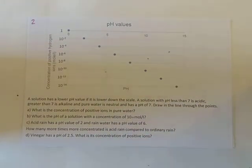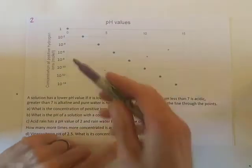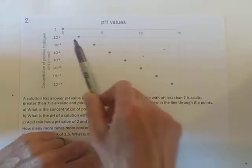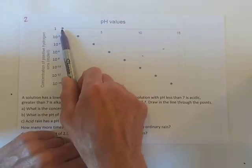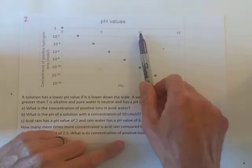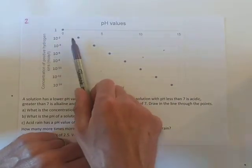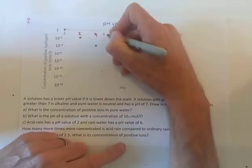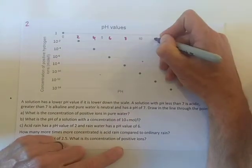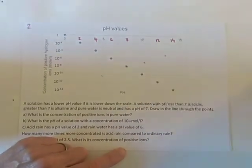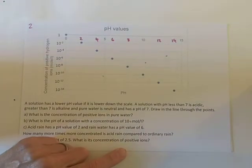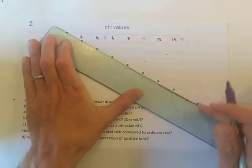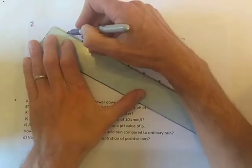Sometimes with these spreadsheet charts it can be really hard to read the numbers off — there aren't many lines to help guide us. But we know we've got a pH value of zero here and a pH value of 10 here. These are equally spaced, going up by two each time, and spotting that is going to really help when reading information from this chart. It also says to draw in the line through the points, which we'll need to do to read it off accurately.